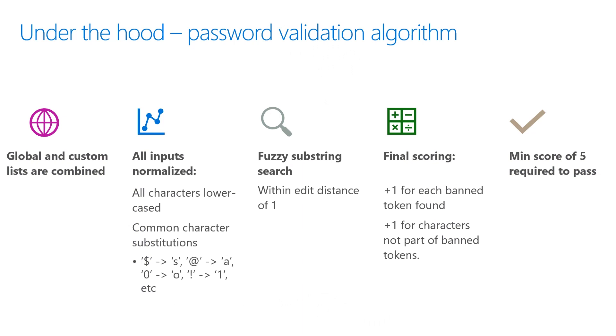Once the algorithm has identified all banned words in the user's password, it assigns the password a score. Every banned password is given one point, and every unique character is given one point. The points are totalled up — if a password receives five or more points, the algorithm deems it strong enough and allows the user to proceed. If the password has fewer than five points, it is rejected and the user must try again.